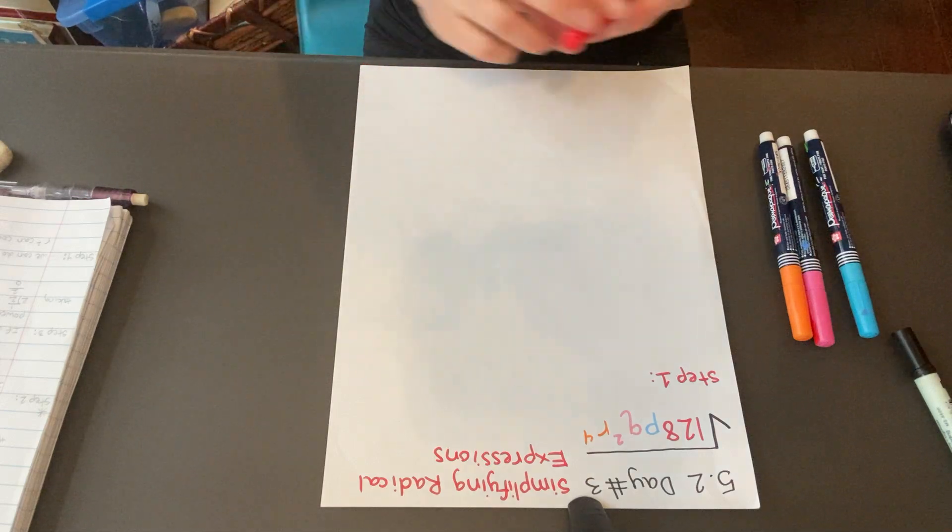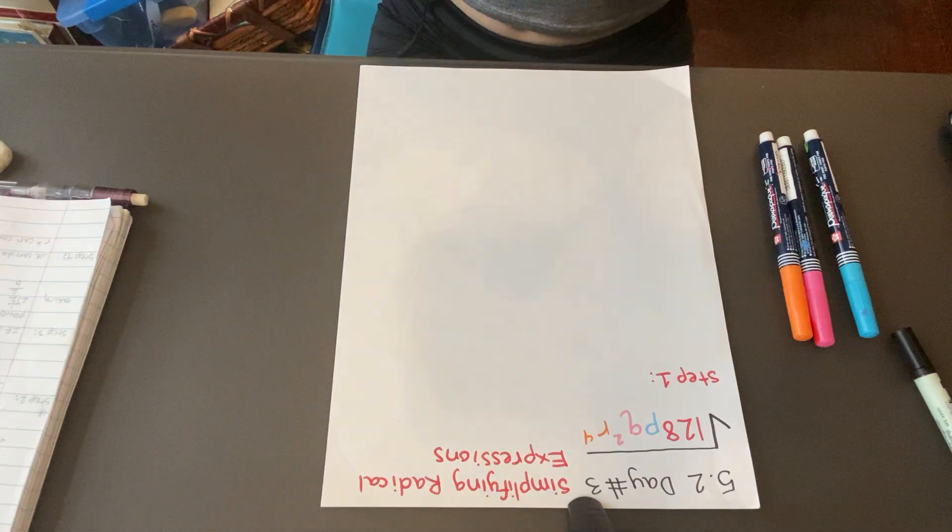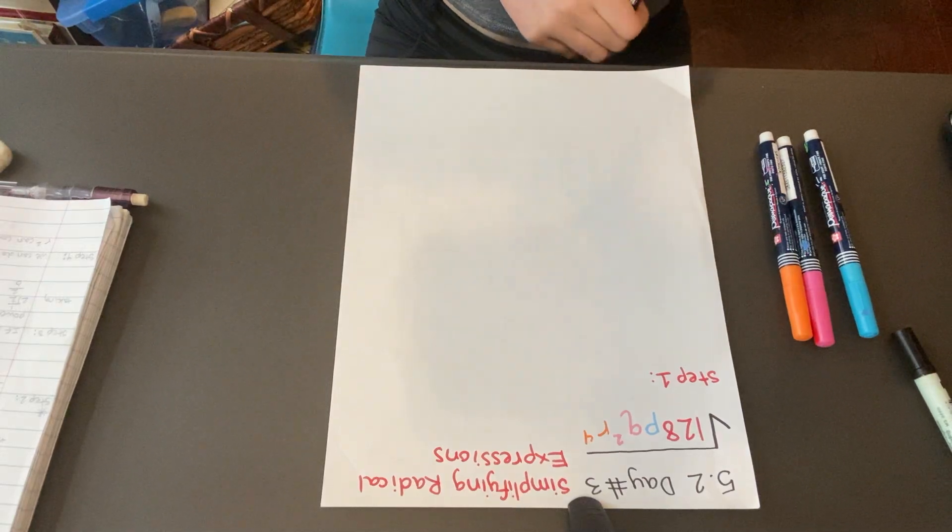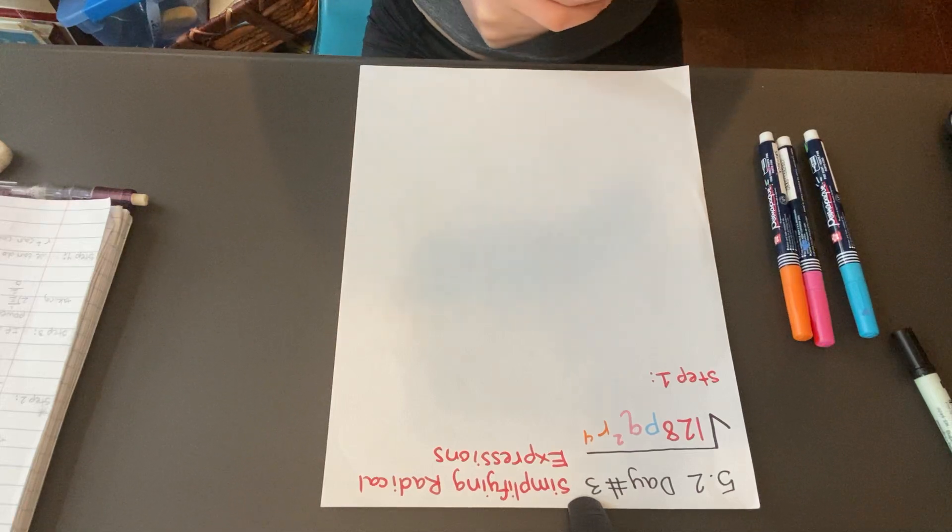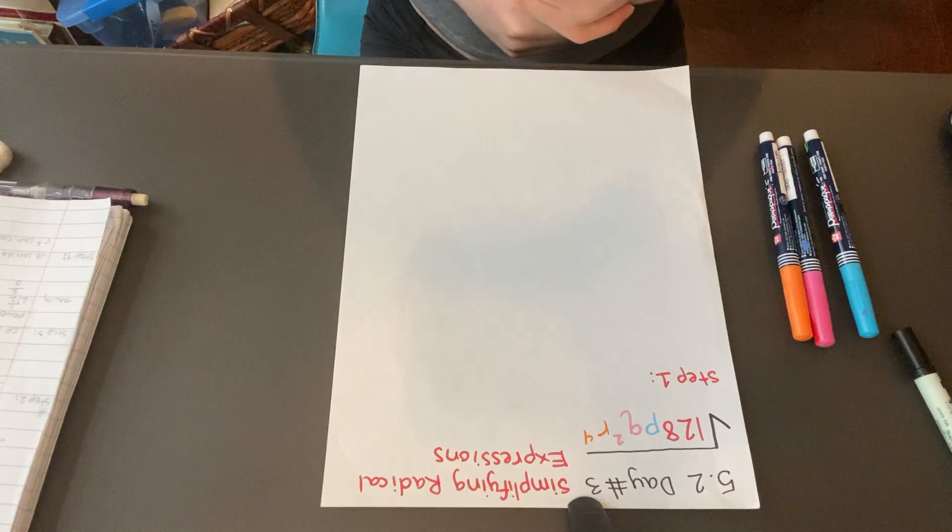Today, we're going to be going over an example problem from 5.2, day number 3, simplifying radical expressions. Our example problem for the day is the square root of 128pq² and r to the fourth.